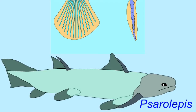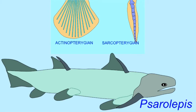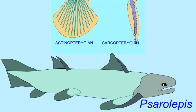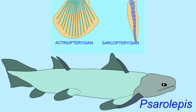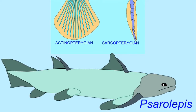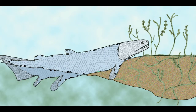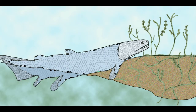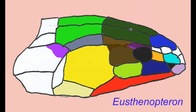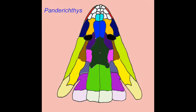As these early Osteichthian fish evolved into Sarcopterygian fish over tens of millions of years, not only did the Sarcopterygian fish evolve lungs, but they modified the skull in many ways to make it more similar to that of amphibians.